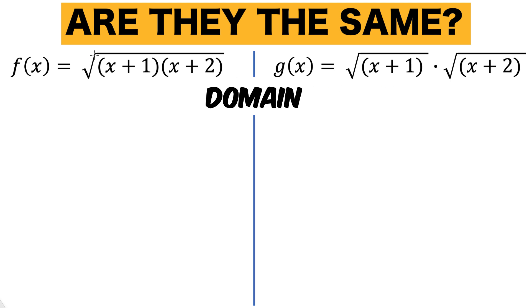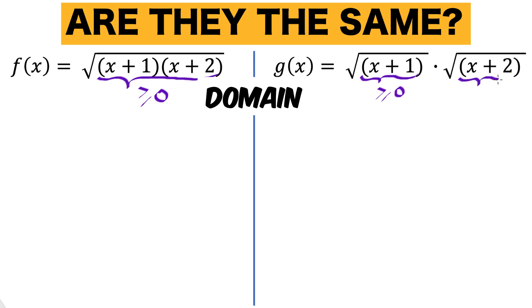In order for f to be defined, its radicand — the quantity (x+1) times (x+2) — must be greater than or equal to 0, i.e., non-negative. In the case of g, the quantity (x+1) must be greater than or equal to 0 and the quantity (x+2) must also be greater than or equal to 0.